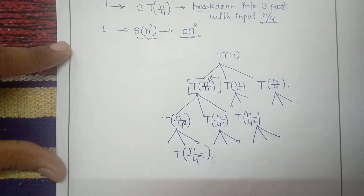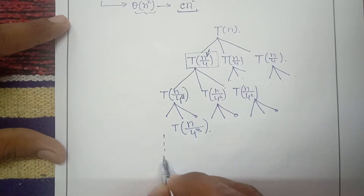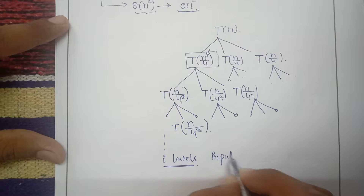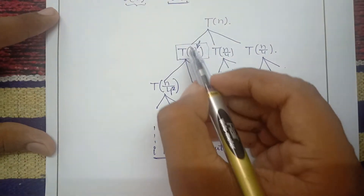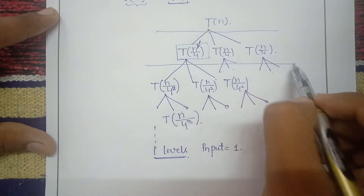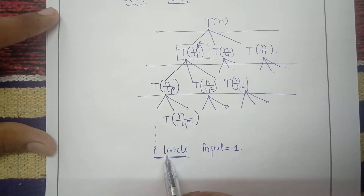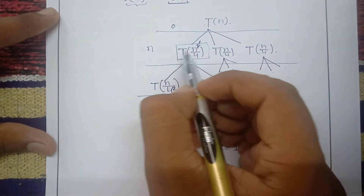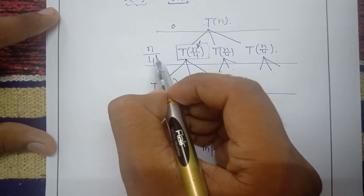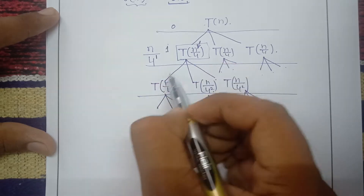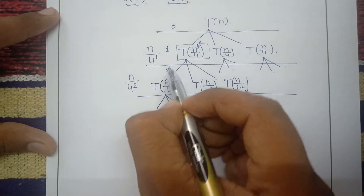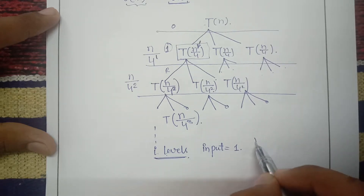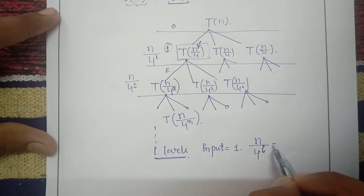Let's assume we have a total of i levels. At the i-th level the input will be 1. We call the top the 0th level. At level 1, input is n/4¹; at level 2, input is n/4². So at level i, input is n/4^i. Setting n/4^i = 1 gives us n = 4^i.